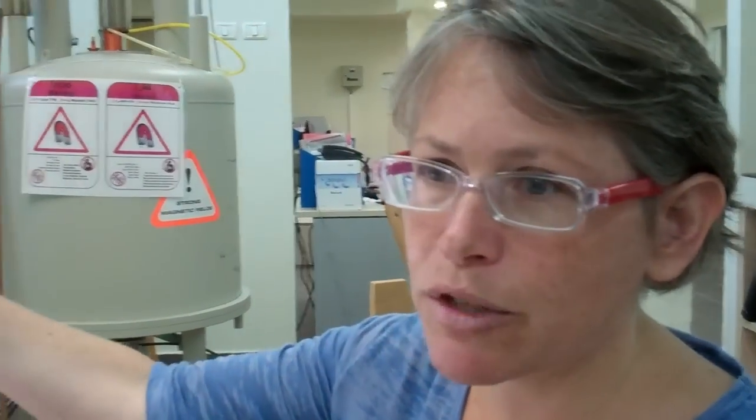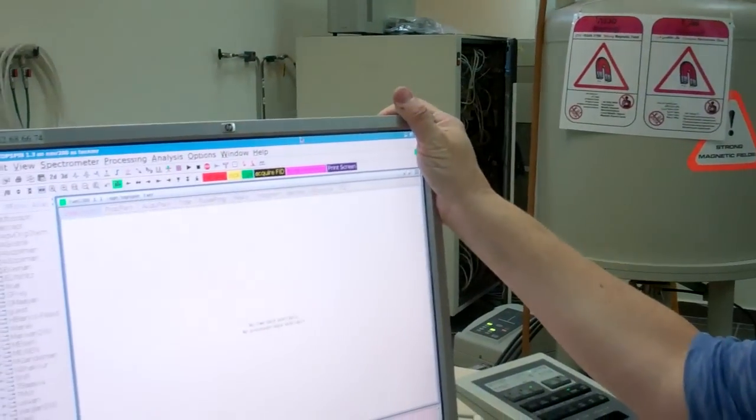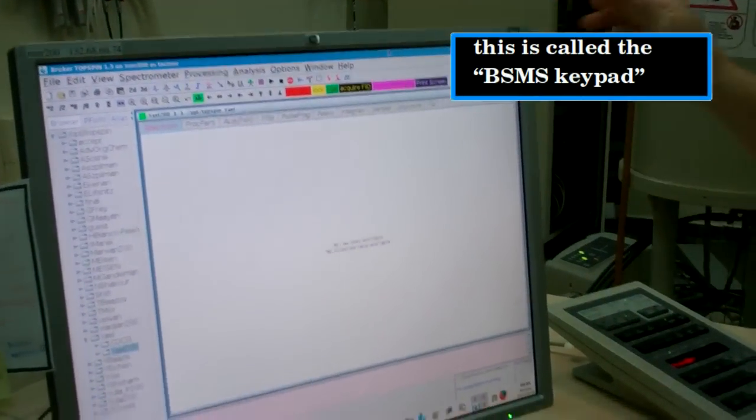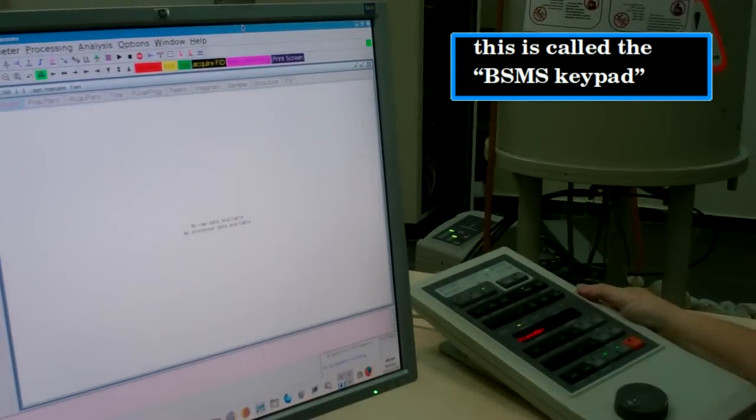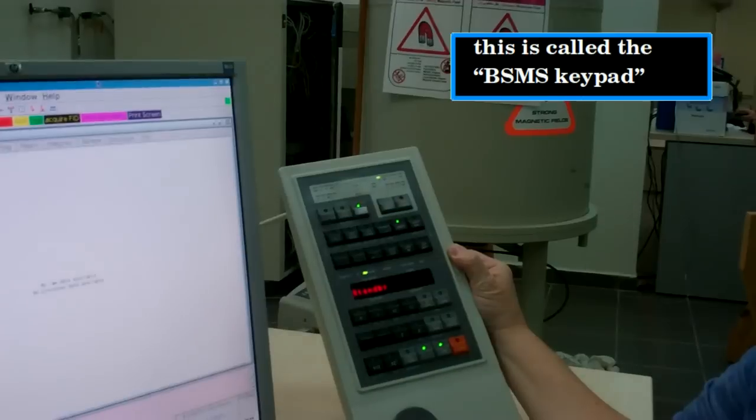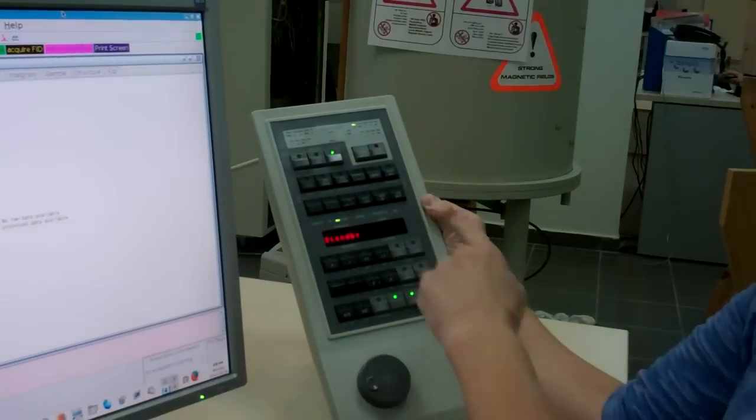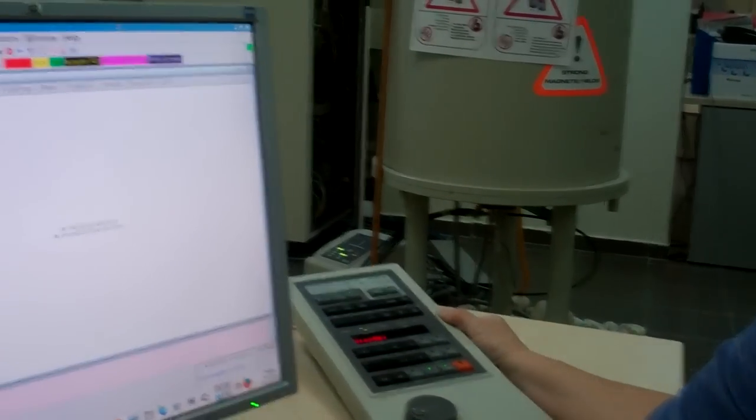To activate the deuterium lock, you should have a per-deuterated solvent at approximately 10% or more of your NMR solution volume. We'll click on three different buttons and wait for the automation routine to finish. You'll notice that if the sweep button on the BSMS spectrometer was lit, it will be automatically turned off once the lock is switched on. Here we go.